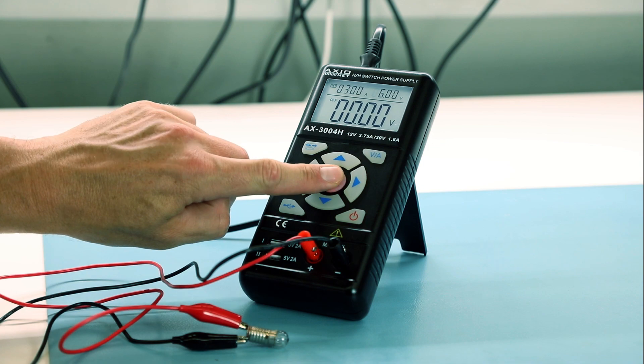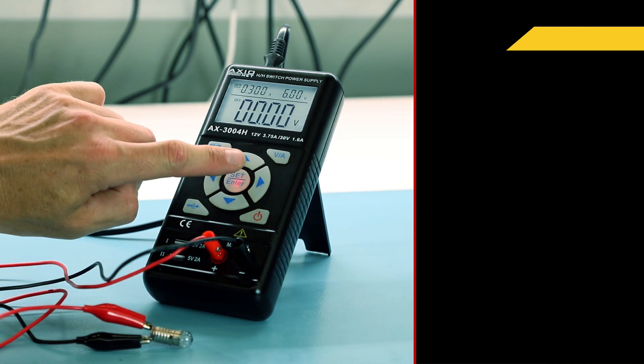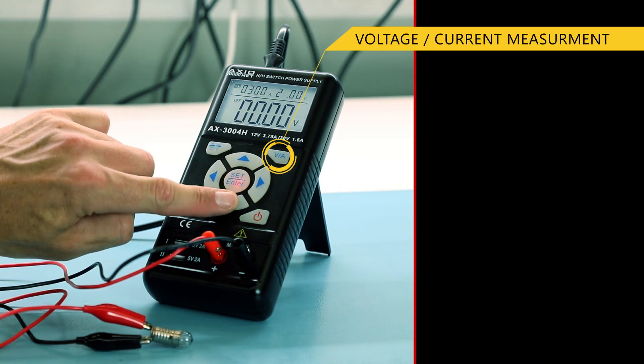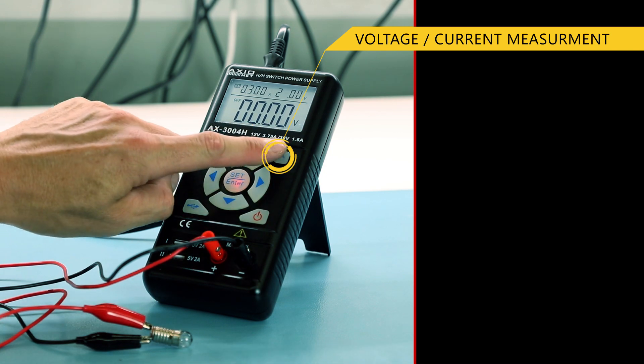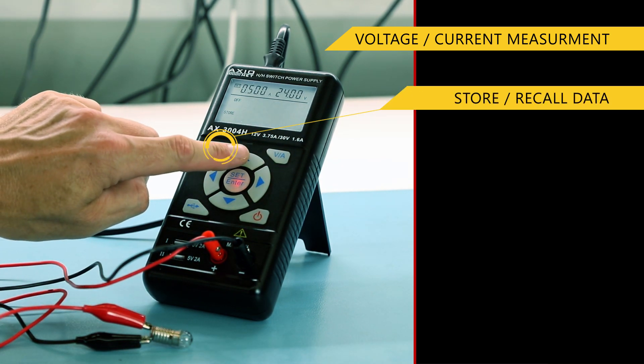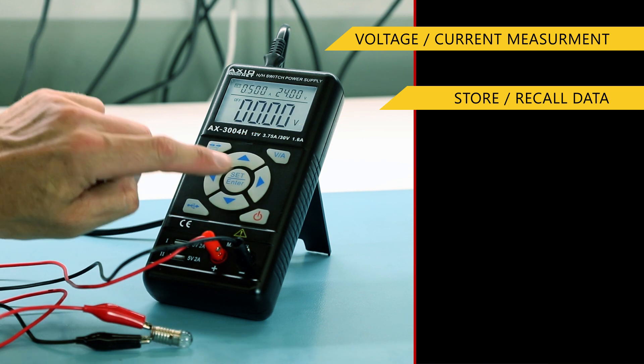The AX3004H allows you to set voltage and current values using buttons on the front panel as well as save sets of settings to ensure efficient and convenient operation.